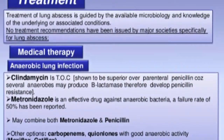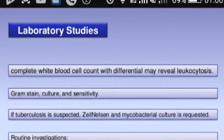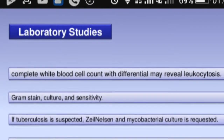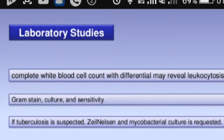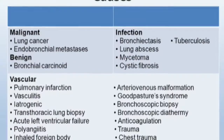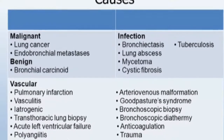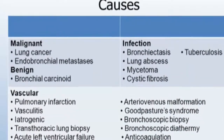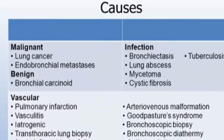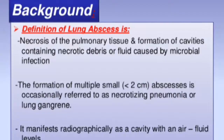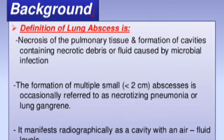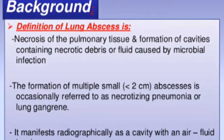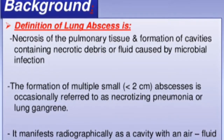Lung abscess may be acute or chronic, single or multiple. Lung abscesses are most frequently caused by anaerobic bacteria. The routes of infection include inhalation, aspiration, hematogenous, transdiaphragmatic, or transthoracic route. Lung abscess can also occur due to secondary infection of a pre-existent cavity, cyst, or bulla.